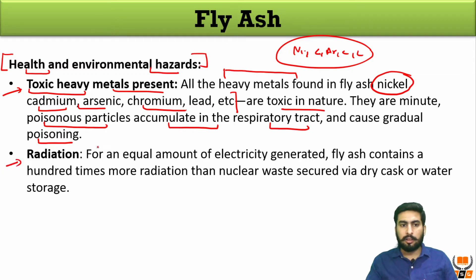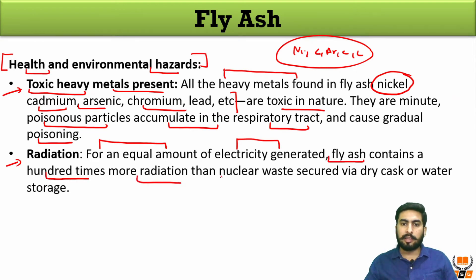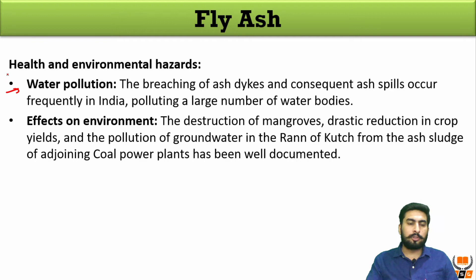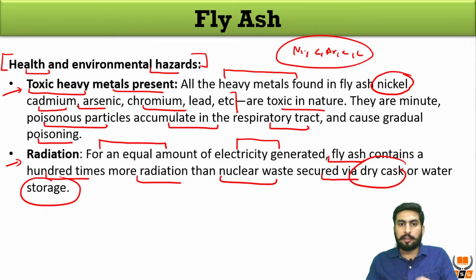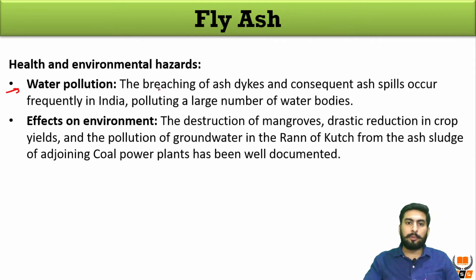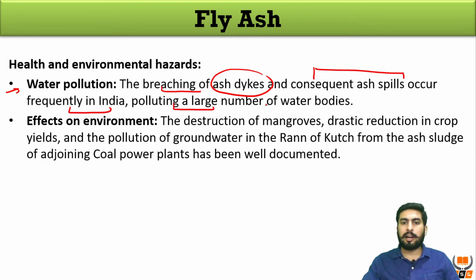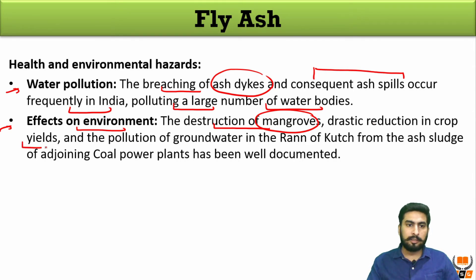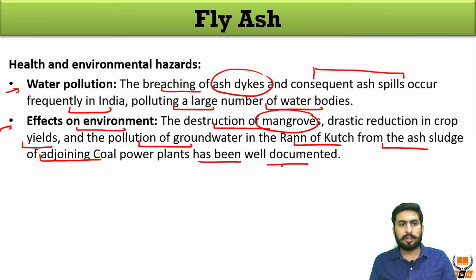The second concern is radiation. For an equal amount of electricity generated, fly ash contains a hundred times more radiation than nuclear waste secured via dry cask and water storage. Next is water pollution — the breaching of ash dikes and consequent ash spills occur frequently in India, polluting a very large amount of water bodies. The effect on the environment includes destruction of mangrove forests, reduction in crop yield, and pollution of groundwater — as documented in the Rann of Kutch in Gujarat from ash sludge adjoining coal power plants.